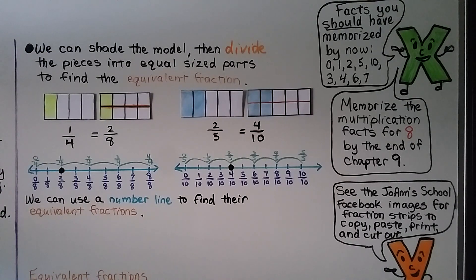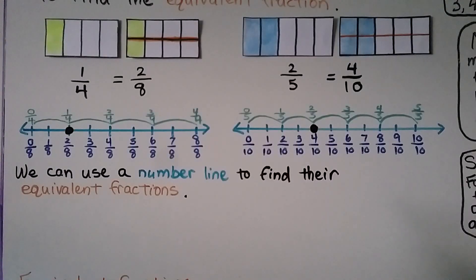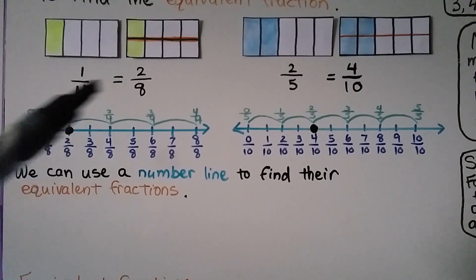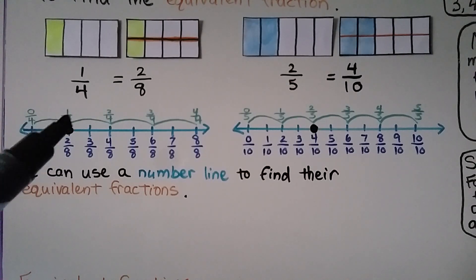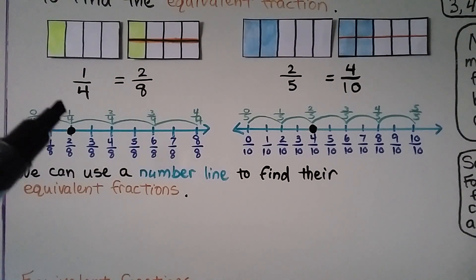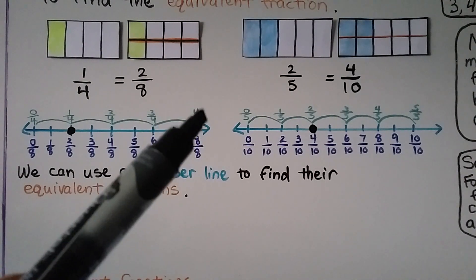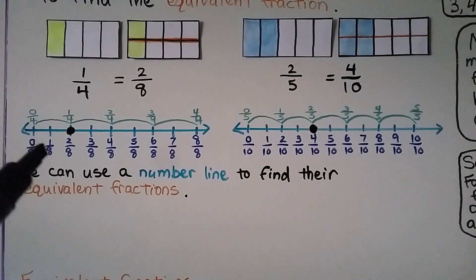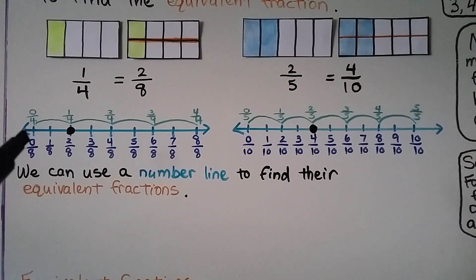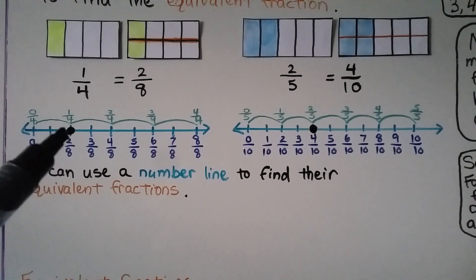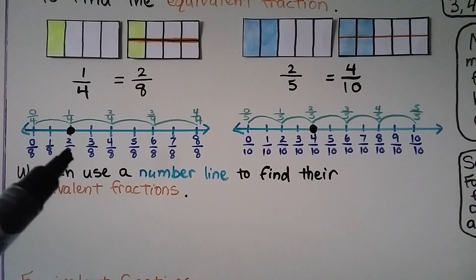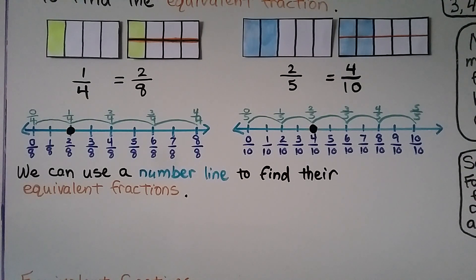And we can use a number line to find equivalent fractions. Here we want to see that one-fourth is equal to two-eighths. This top part is split into four equal parts. We start at zero and go one-fourth, two-fourths, three-fourths, four-fourths, which is one whole. And on the bottom of the number line, we have the units split into eight equal parts. We can see that one-fourth is the same point as two-eighths, so they're equivalent fractions.